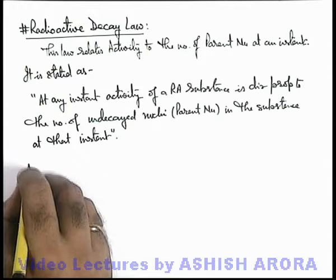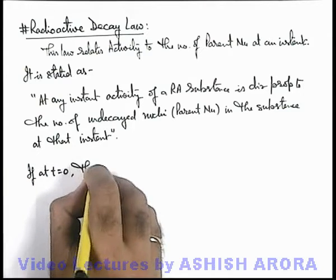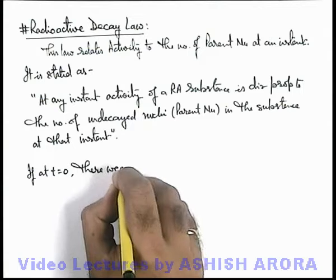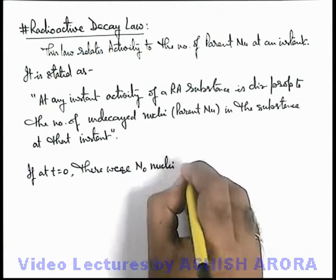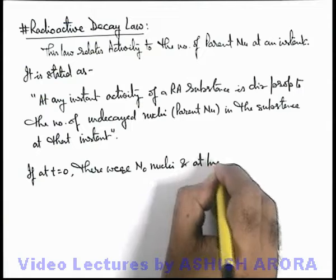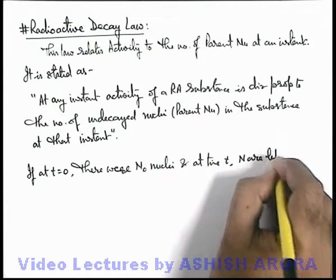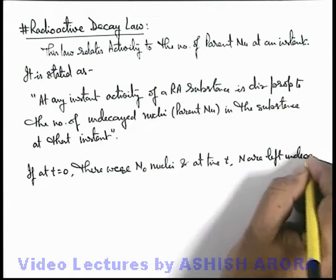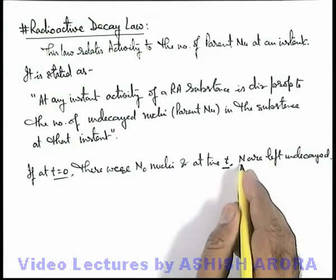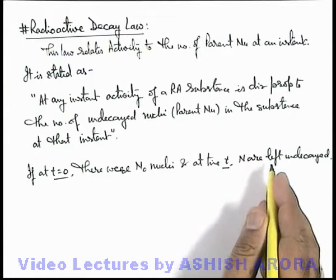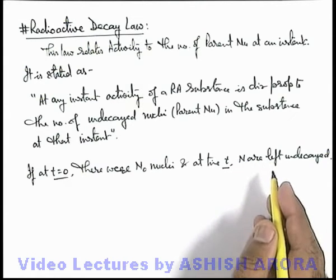So here we can write: if at t equal to zero there were N₀ nuclei, and at time t, N are left undecayed, that means in the duration from zero to t, N₀ minus N would have been transformed to daughter nuclei, those who have decayed by emission of radioactive radiations.